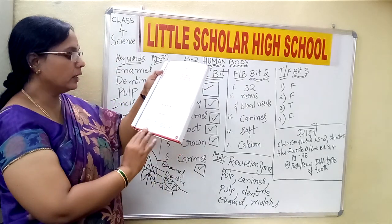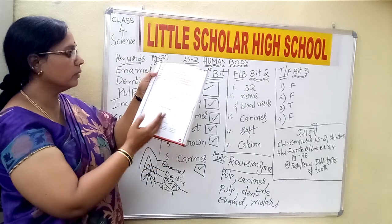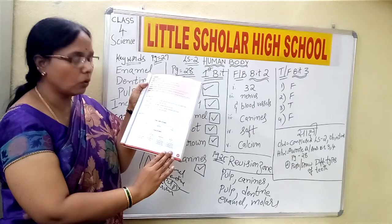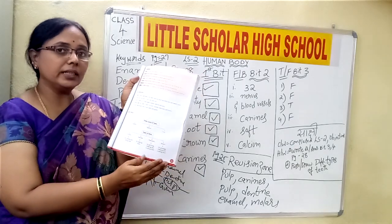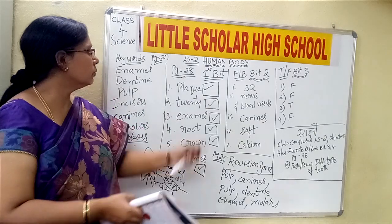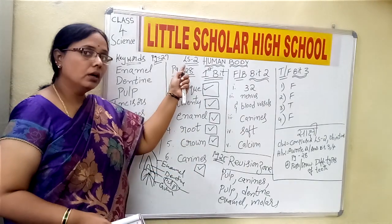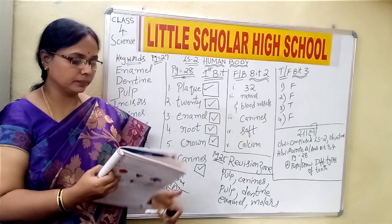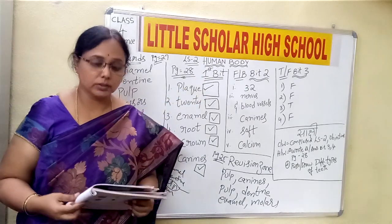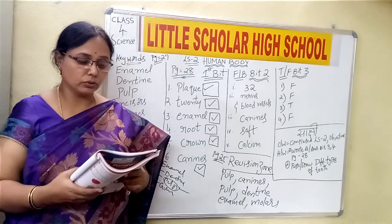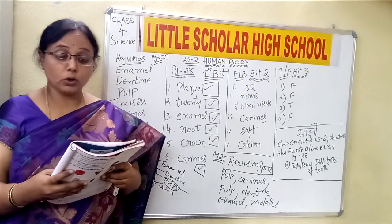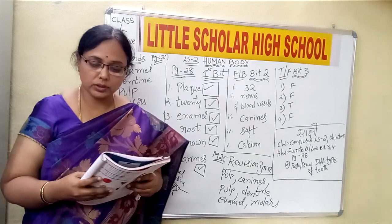On the same page number 27, a topic is given as mind mapping — what all we have learnt is given in the form of a flow chart for easy learning. Now let us move to page number 28. Please open page number 28. The first bit is choose the correct answer. Let me read the question first, then we will go for the answers. Four options are given, of which we have to choose the correct one.